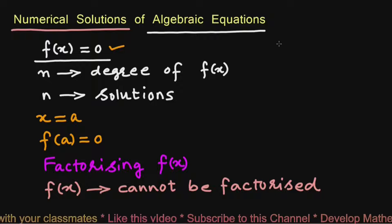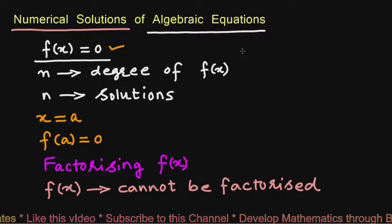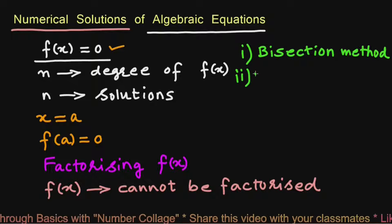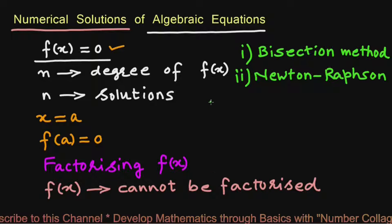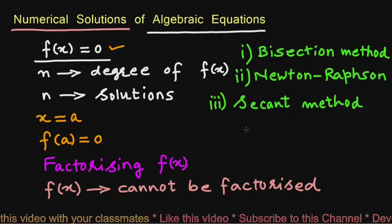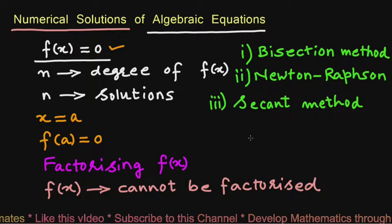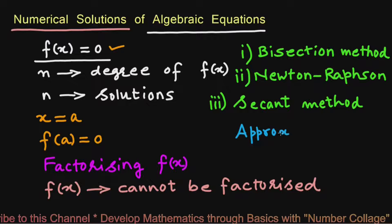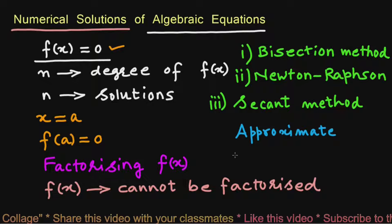There are three methods to solve algebraic equations numerically. The first is the bisection method, the second is the Newton-Raphson method, and the third is the secant method. Please note that the solutions obtained by numerical methods will be approximate and near the true roots of the equations.